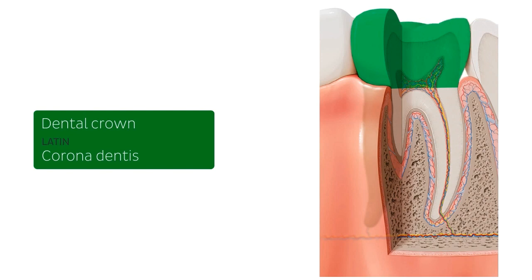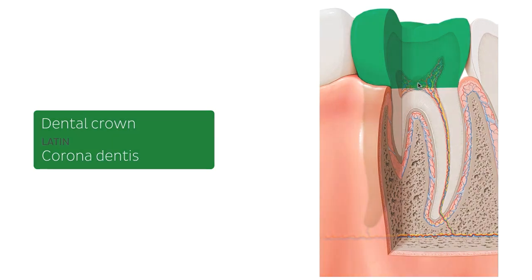The bulk of the crown is composed of dentin, or dentine, which is a calcified tissue of the body, with the pulp chamber within. I'll just point out with my mouse where the dentin is — this sort of beige layer — so inside of the enamel but surrounding the pulp chamber.